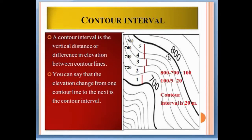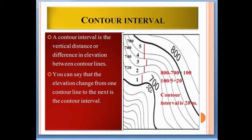Now suppose we don't have labeled contour lines — how do we calculate the contour interval? Here is the formula. First, take two index contours: this one has elevation 700 and this one has elevation 800. Calculate the difference: 800 minus 700 equals 100. Now count the contour lines between 700 and 800 — that is 1, 2, 3, 4, and 5. There are 5 contour lines between these two index contours, so 100 divided by 5 equals 20.